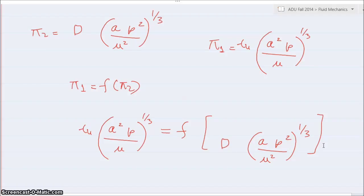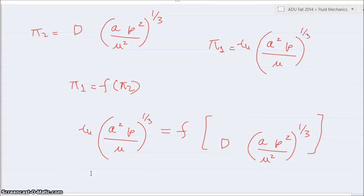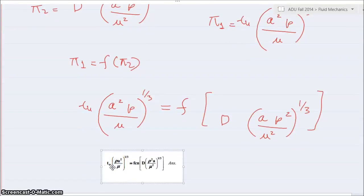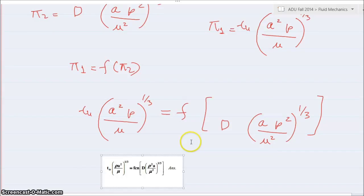And that is my final answer. Let's check out if it's correct or not, give me a second. So I have just checked the solution manual and this is the solution they have given. T R, which is basically T U, is equal to rho a square by mu to the 1 by 3, is equal to function of d rho square a over mu square to the 1 by 3. So basically that means we are right.